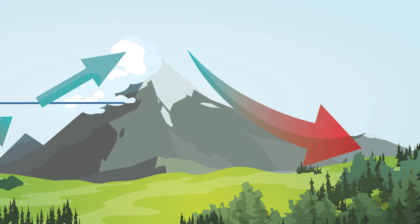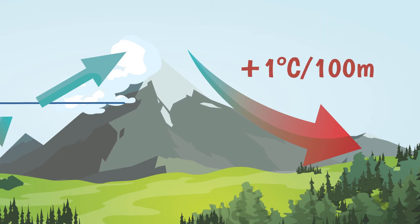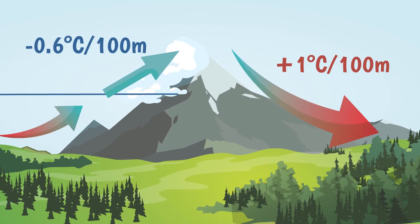Now the opposite phenomenon happens. The air that sinks becomes compressed, and it warms up. Because the air is now dry, it will follow the dry adiabatic lapse rate and warm up by 1 degree per 100 meters, or almost twice as fast as it cools down on the upwind side. By the time foehn winds reach the valley, they will be not only dry, but also much warmer than they were on the other side of the mountain.